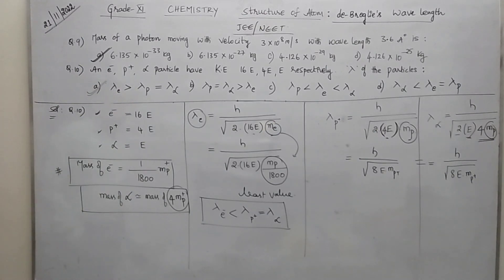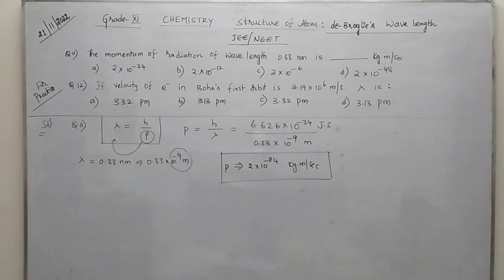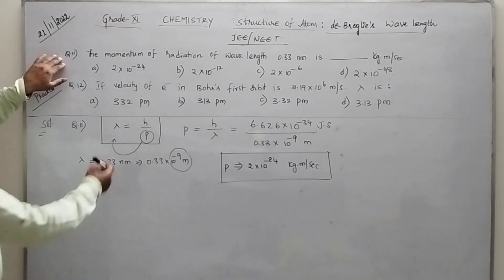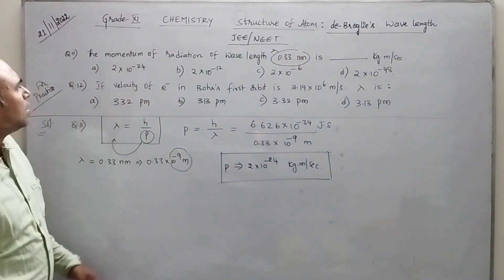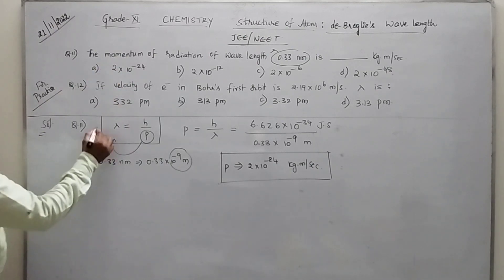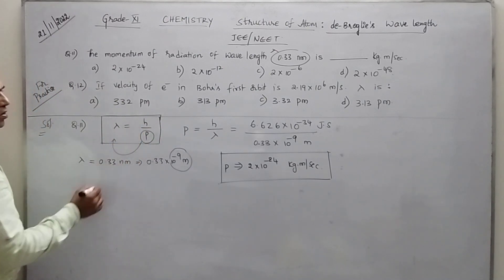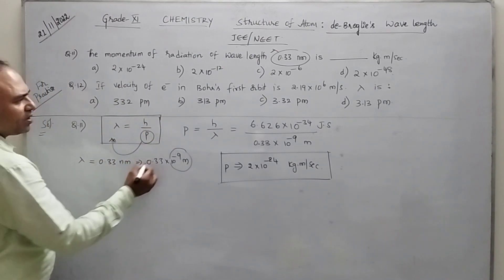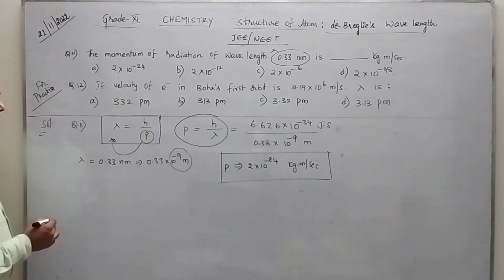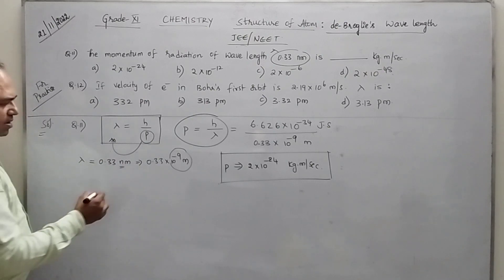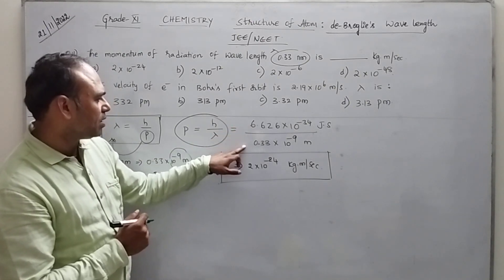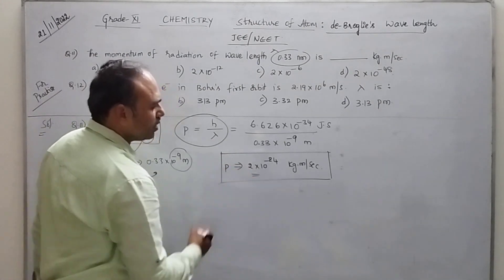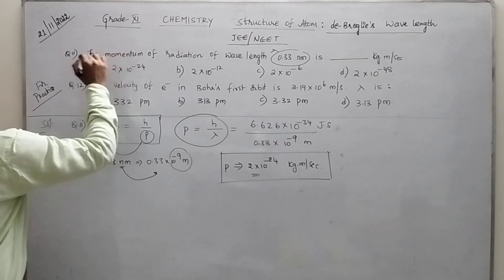Hope you have understood this. We have completed 10 questions. Now the last question, question number 11. The momentum of radiation of wavelength — lambda value is 0.33 nanometers — asking to find the momentum. You know the second formula: lambda is equal to H by momentum. Rearranging: P is equal to H by lambda. Nanometer is 10 to the power of minus 9 meters. On substituting Planck's constant and lambda, finally you get the answer 2 into 10 to the power of minus 24.